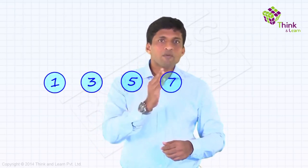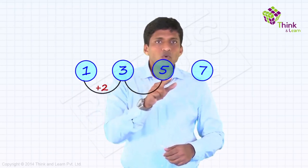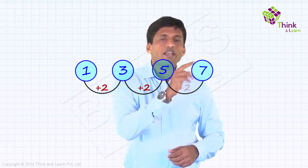If I write this down, we call them odd numbers. But how are you getting the numbers here? By adding 2 here, I got 3. Again 2, I got 5. Again 2, I got 7 like that.